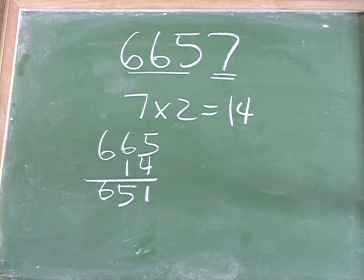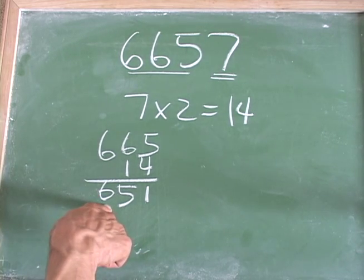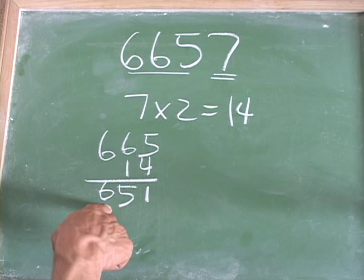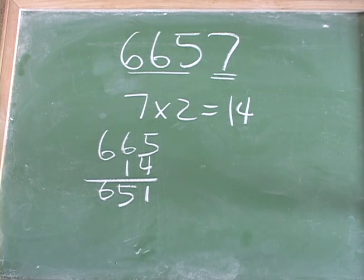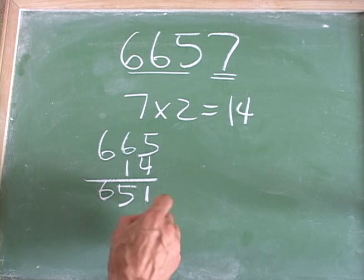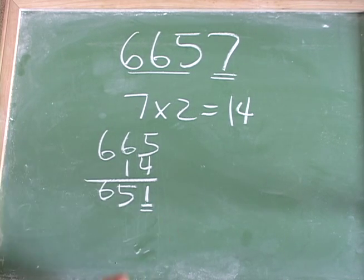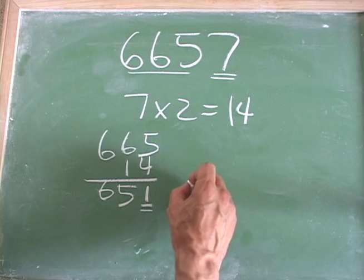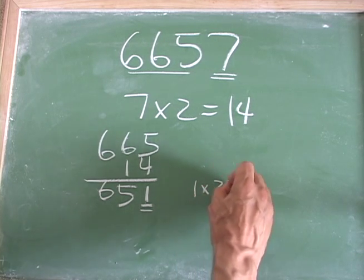So now at this point you can do long division, you can divide 7 into 651 and see if that's divisible by 7. But if you don't want to do the long division, then you just repeat the process. You look at this last number here, 1, and you multiply it by 2, and we get 1 times 2 equals 2.